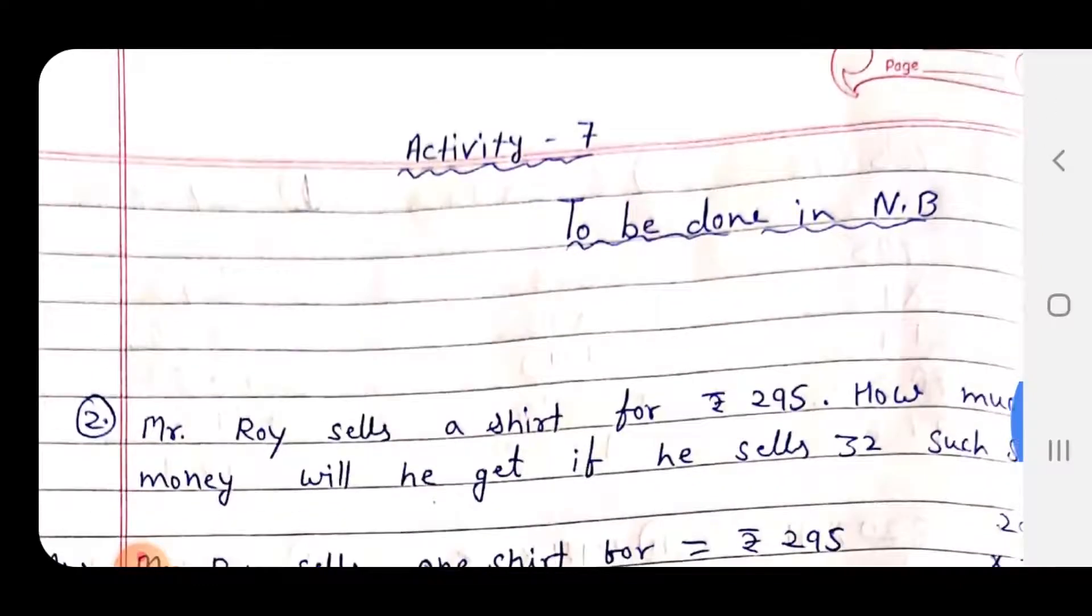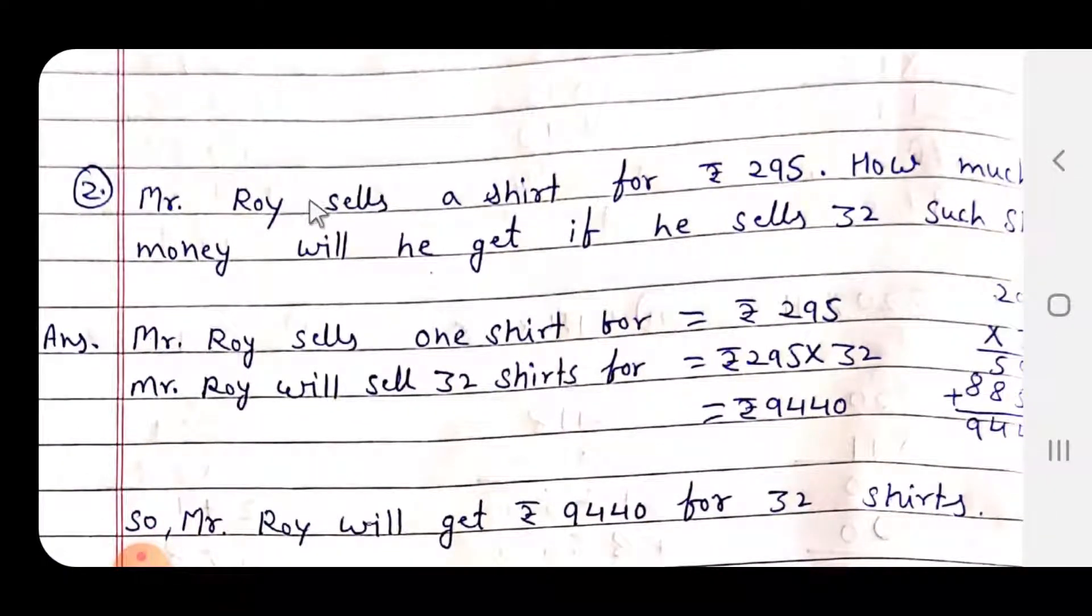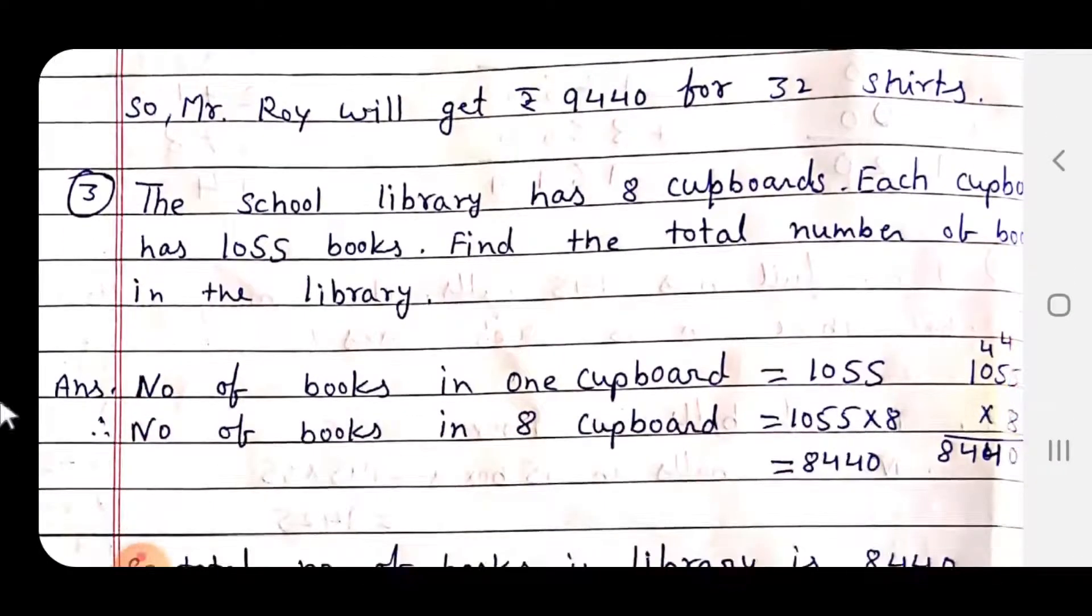Now Activity 7, to be done in notebook. Mr. Roy sells a shirt for Rs. 295. How much money will he get if he sells 32 such shirts? Mr. Roy sells one shirt for Rs. 295. For 32 shirts: 295 multiply by 32 gives 9440. So Mr. Roy will get Rs. 9440 for 32 shirts.